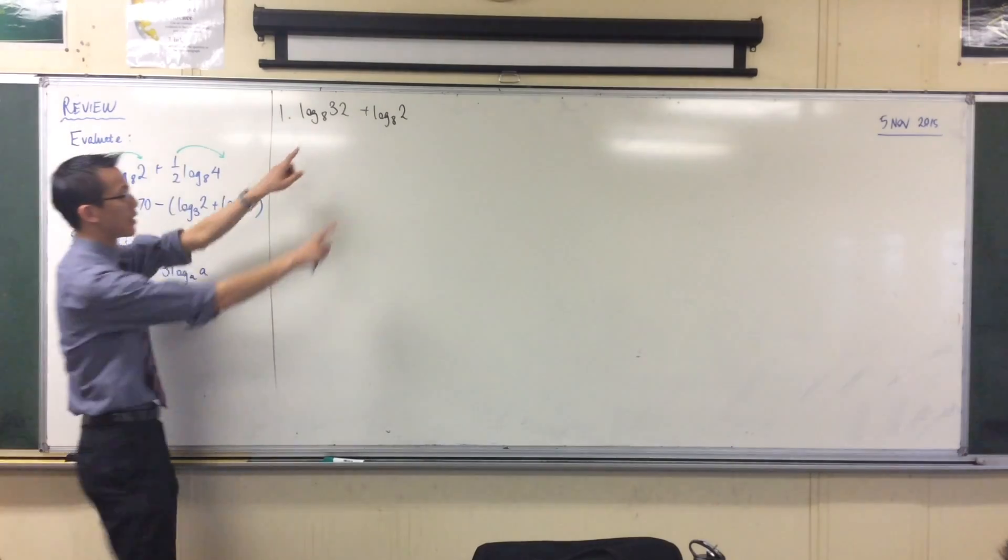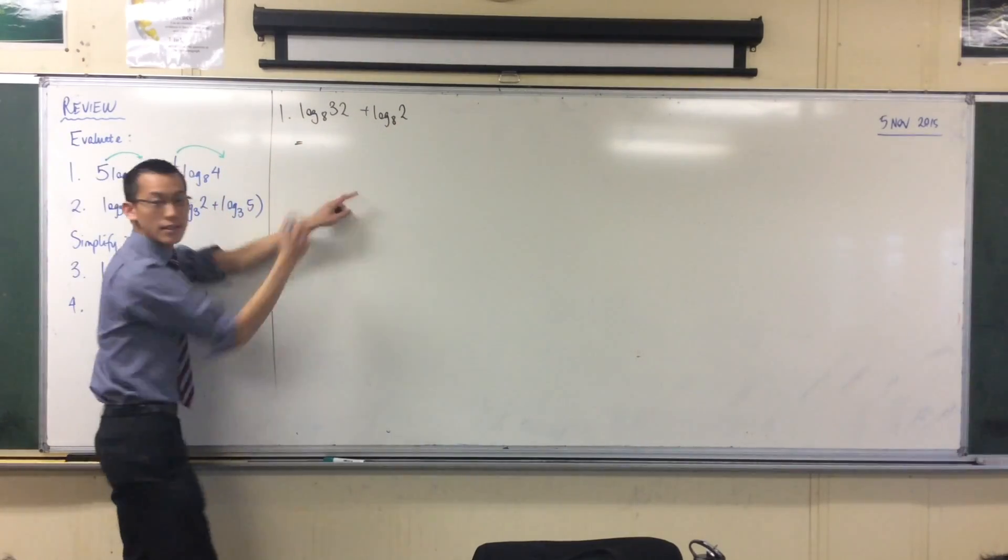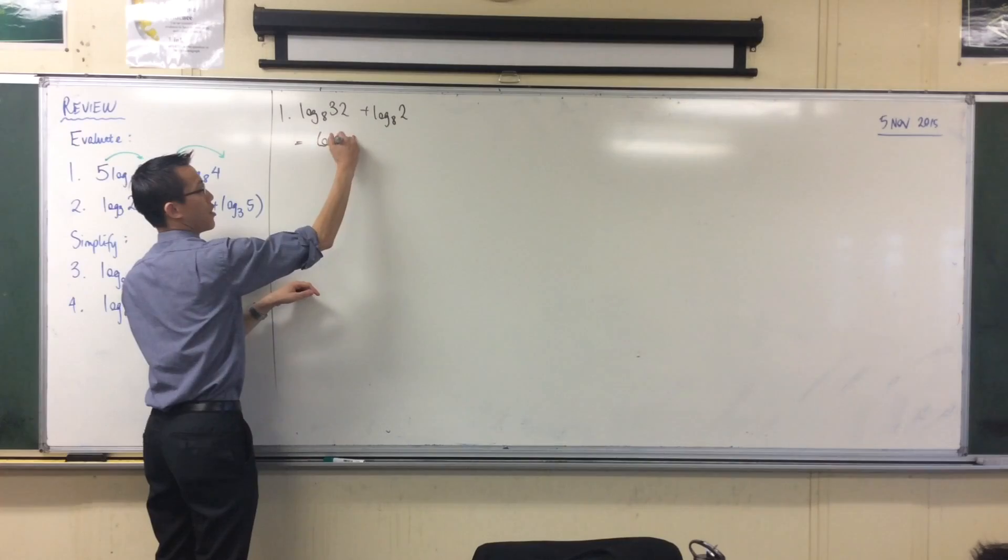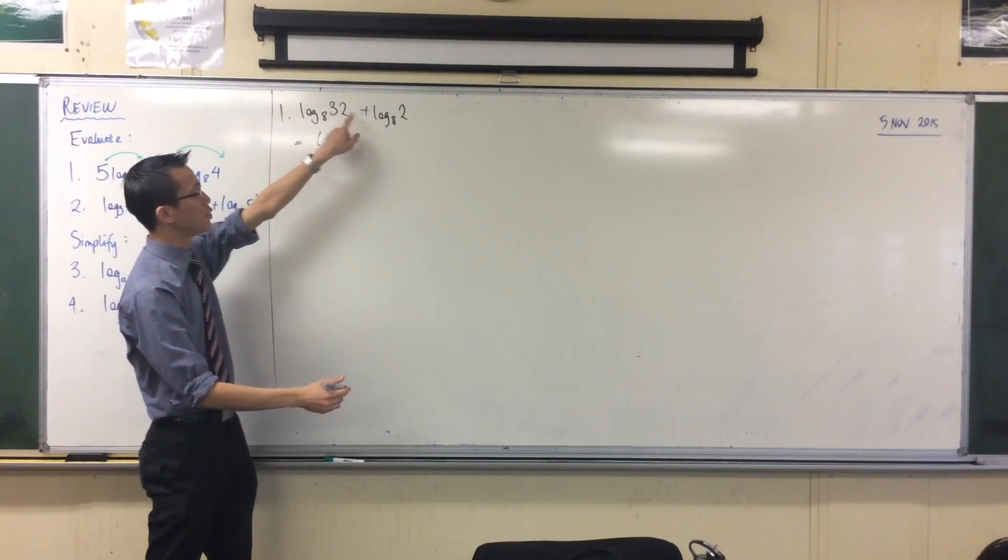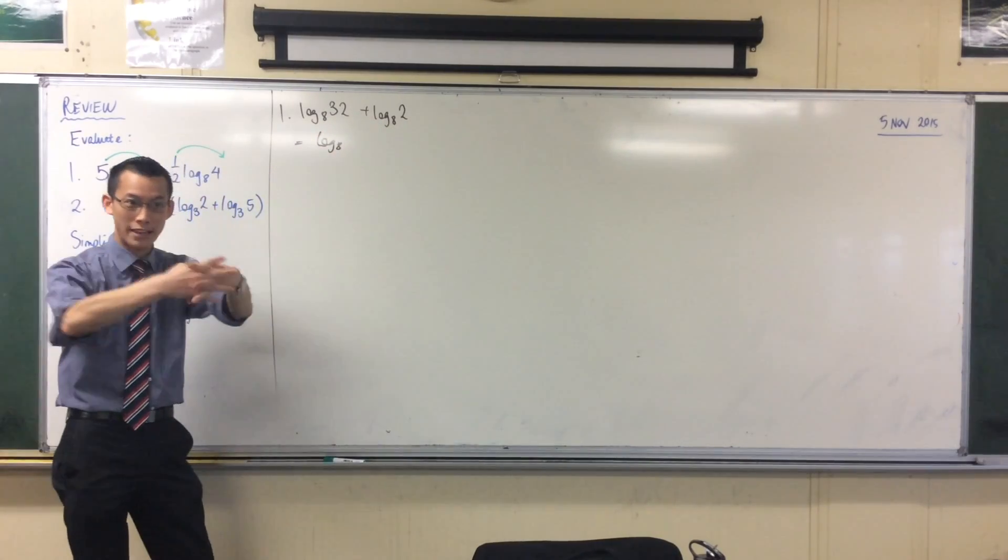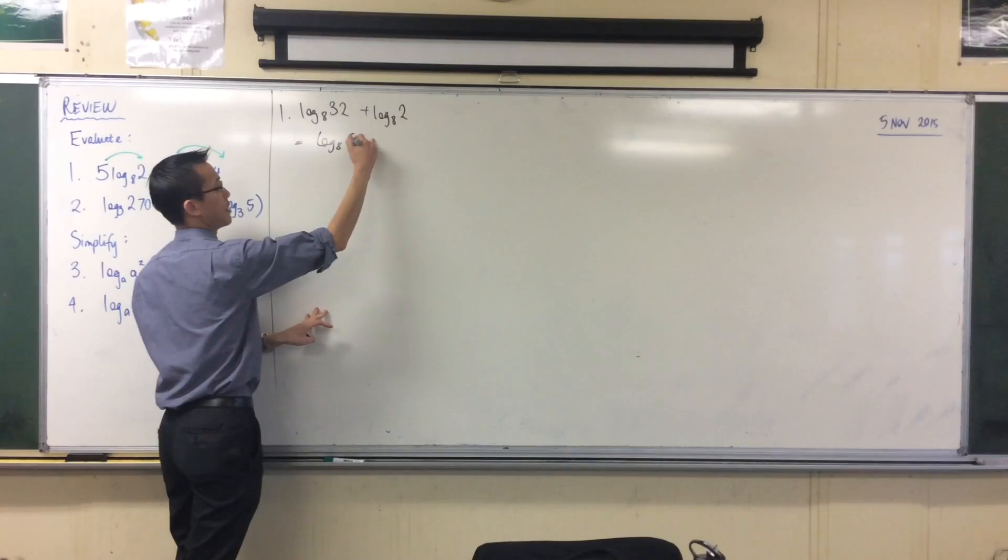Joseph, you combine the logs together. Because it's addition, you multiply. Fantastic. So this 32 and this 2, they're going to multiply together and become 64, right? Fantastic.